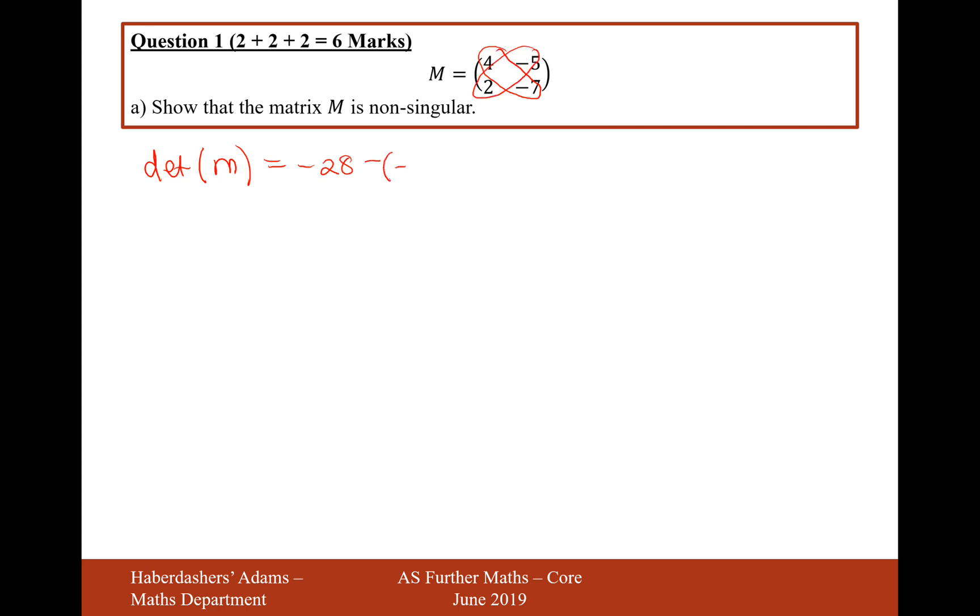So it subtracts minus 10. You multiply the terms. So that's going to be minus 18. So therefore non-singular. Because singular would mean that the determinant equals 0.